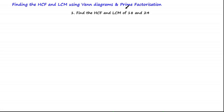As we saw in a previous tutorial, prime factorization serves as building blocks for numbers, so we can describe each number by its prime factors. Venn diagrams give us an easy way to illustrate the distinct prime factors and the common prime factors between a set of numbers.